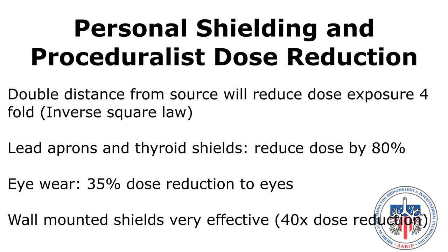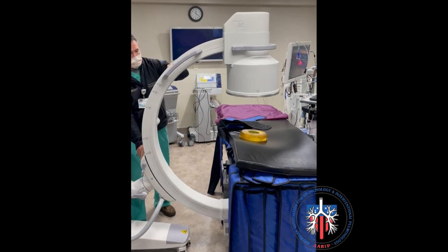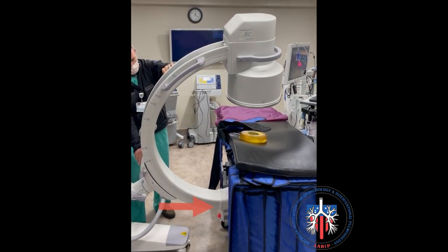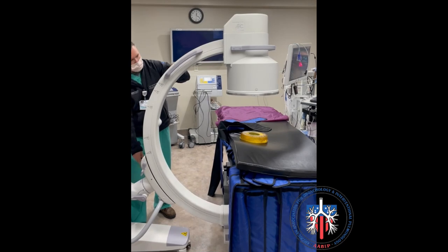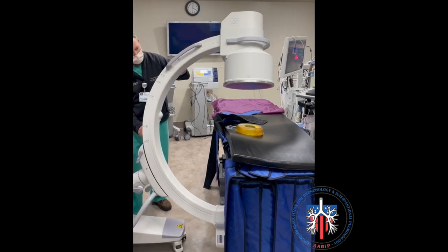Personal shielding and proceduralist dose reduction: doubling the distance from the source will reduce dose exposure by four-fold. Lead aprons and thyroid shields will reduce dose by 80%. Eyewear will reduce dose by 35% to the eyes. Wall-mounted shields are very effective and will reduce dose by 40 times. This is an example of angling the C-arm with the x-ray tube angled cephalad and then caudad.